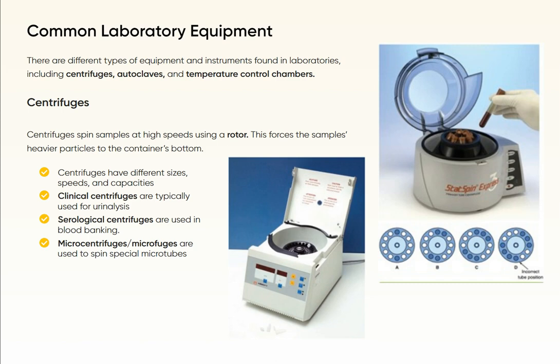Centrifuges spin samples at high speeds using a rotor. This forces the sample's heavier particles to the container's bottom. Centrifuges have different sizes, speeds, and capacities. Clinical centrifuges are typically used for urinalysis. Serological centrifuges are used in blood banking. Microcentrifuges, or microfuges, are used to spin special microtubes.